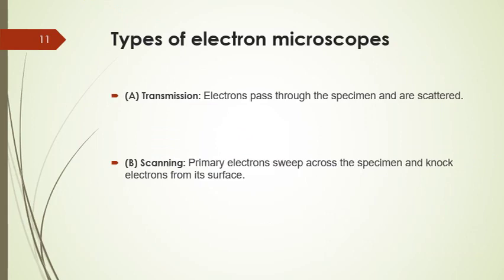Now, for the two types of electron microscope: in transmission electron microscopy, electrons pass through the specimen and are scattered, and the magnetic lens focuses the image onto a fluorescent screen or a photographic plate. In scanning electron microscopy, a primary electron beam sweeps across the specimen and knocks electrons from its surface. These secondary electrons are picked up by a collector, amplified, and transmitted onto a viewing screen or a photographic plate.